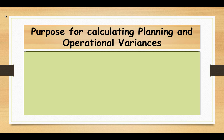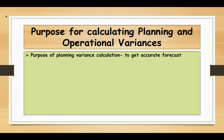Now we will see the purpose or reason for calculating planning and operational variances. When you are asked to analyse the purpose of planning and operational variances in an exam question, you must relate your answer to the question — you should not give answers in a general manner. Planning variances are uncontrollable and are set by the top management or senior management. By examining them, we can see the efficiency or forecasting skills of the planning department.